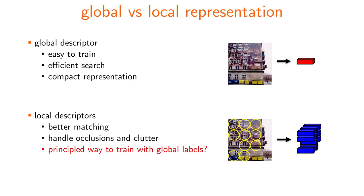Global image descriptors are easy to train with image level labeling; they are compact and efficient in search. On the other hand, local descriptors better handle occlusion and clutter. We work on a principled way to learn local descriptors supervised only by image level labels.